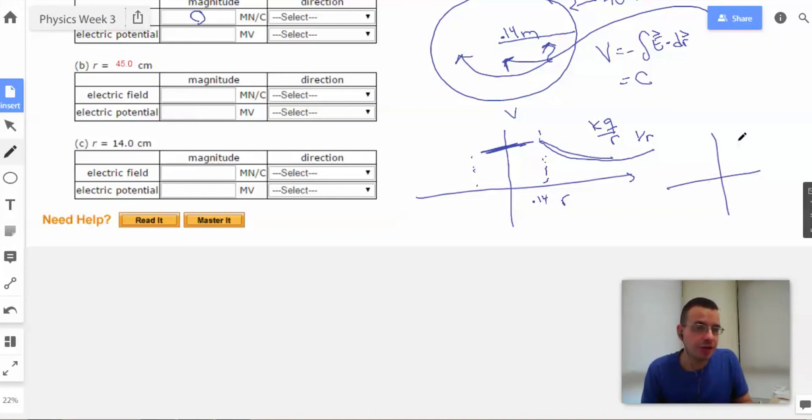Electric field on the other hand. This is our 0.14 area. The electric field will be 0. And it'll start up here as soon as we reach the end. And it'll lower by 1 over R squared.